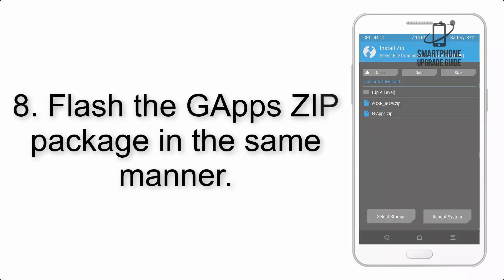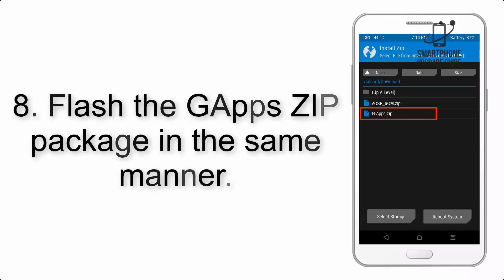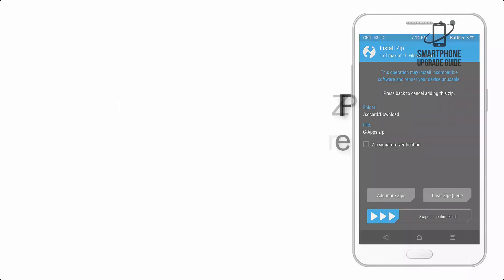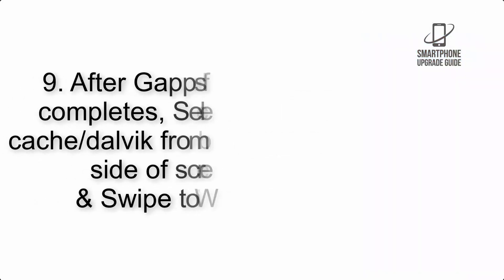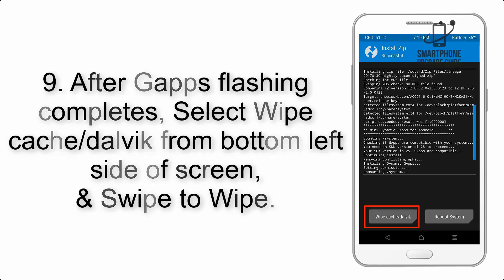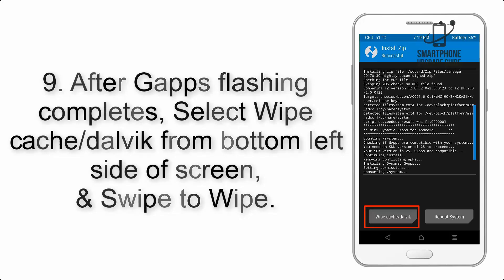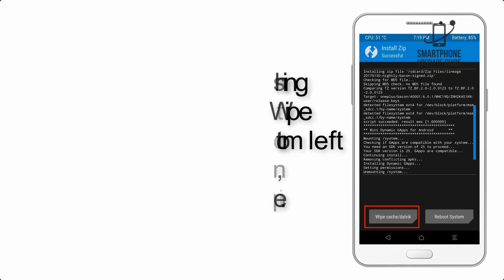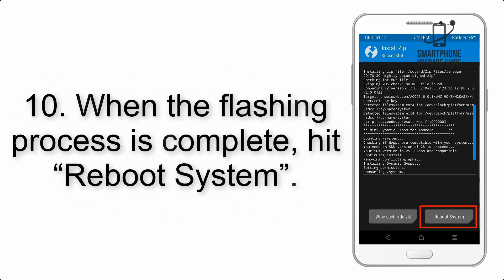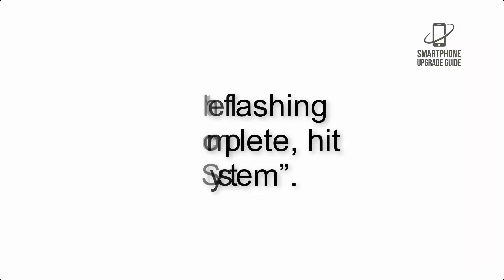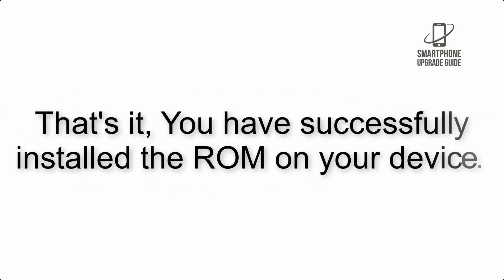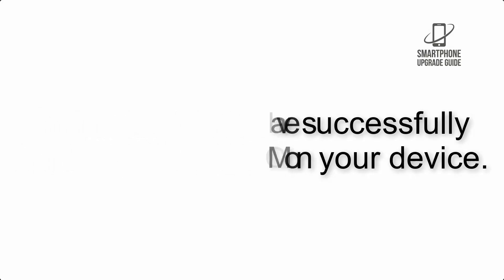Step 8: Flash the GApps zip package in the same manner. Step 9: After GApps flashing completes, select Wipe Cache from the bottom left side of the screen and swipe to wipe. Step 10: When the flashing process is complete, reboot system. That's it — you have successfully installed the ROM on your device.